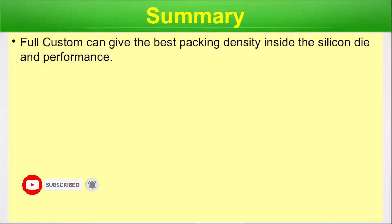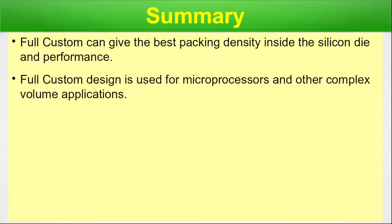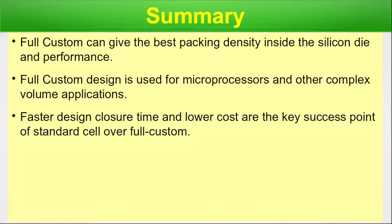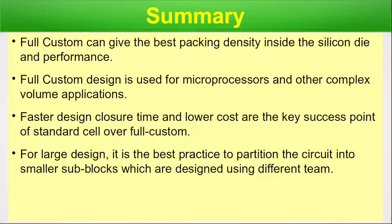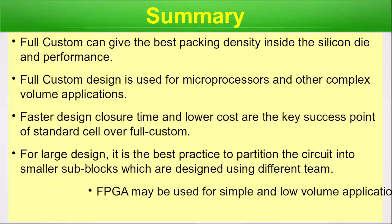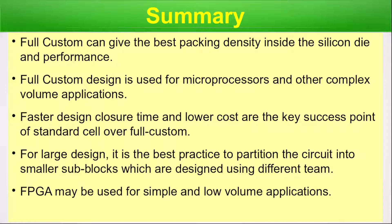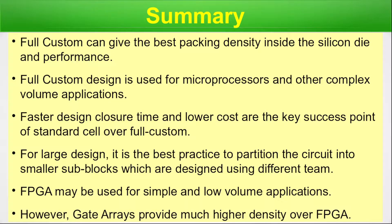Summary: Full custom gives the best packing density inside the silicon die and highest performance, and is used for microprocessors and other complex high-volume applications. Faster design closure time and lower cost are key advantages of standard cell over full custom. For large designs, it is best practice to partition the circuit into modular sub-blocks. FPGA may be used for simple and low volume production, however gate arrays provide much higher density over FPGA.